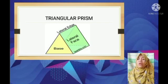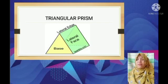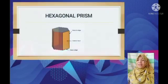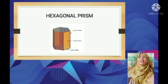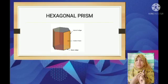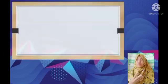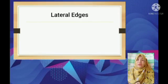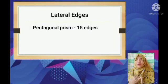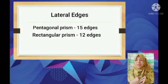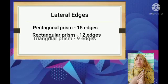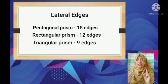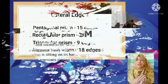The hexagonal prism is composed of two hexagonal bases and six rectangular sides. Focusing on their lateral edges: a pentagonal prism has 15 edges, a rectangular prism has 12 edges, a triangular prism has 9 edges, and a hexagonal prism has 18 edges.